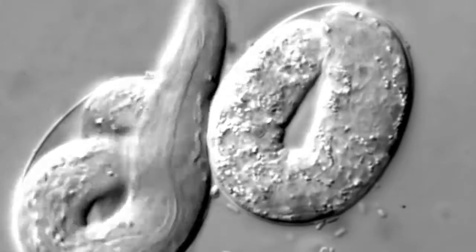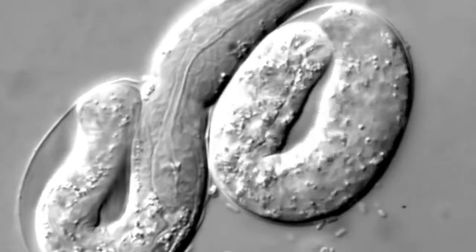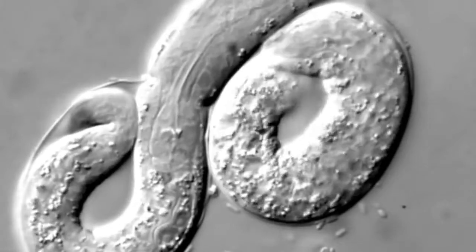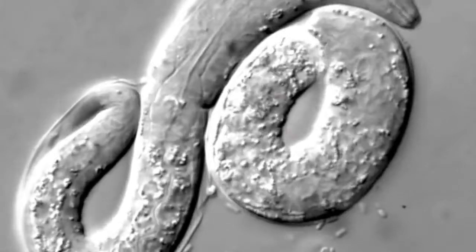There are two forms, hermaphrodites and males. Hermaphrodites have 959 somatic cells, while males have 1,031.